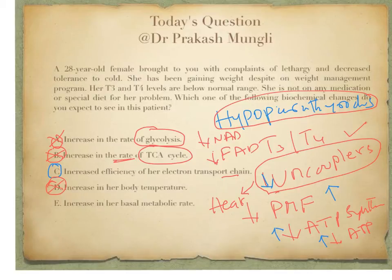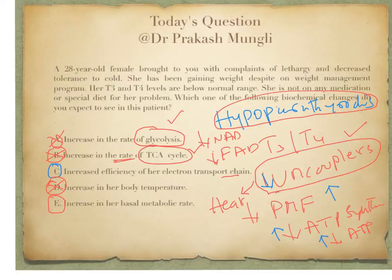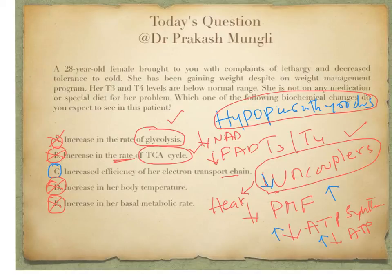Option E says increase in basal metabolic rate. As seen from options A and B, there is a decrease in glycolysis and a decrease in the TCA cycle. The electron transport chain is running efficiently, so with less food they are able to make more ATP. There is no need for an increase in basal metabolic rate. In fact, hypothyroid patients have a decreased basal metabolic rate — the need to run intermediary metabolism is reduced because the electron transport chain is efficient.